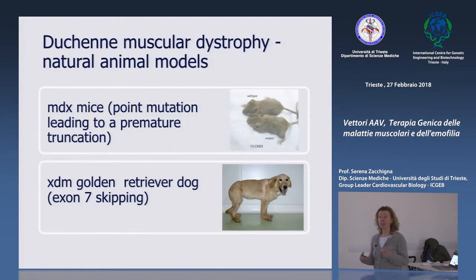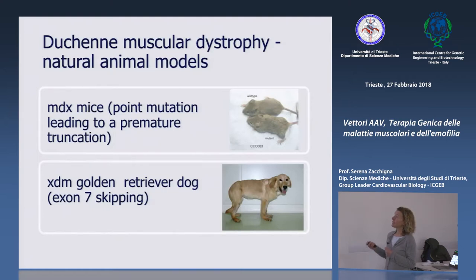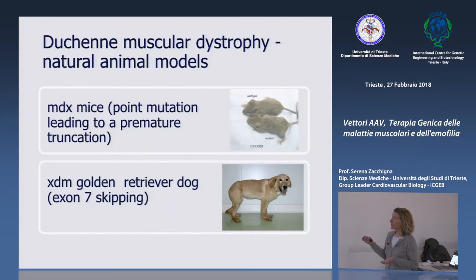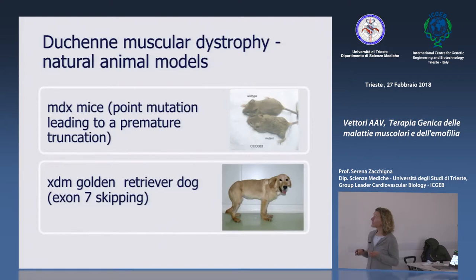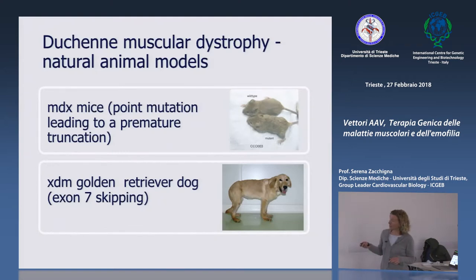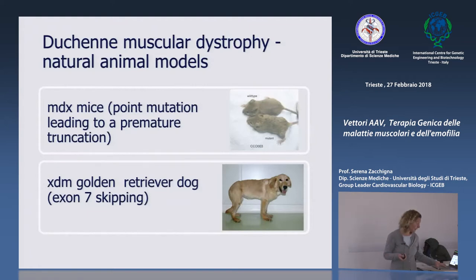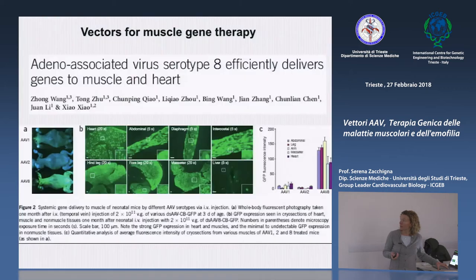Aspetti positivi per la terapia genica della distrofia di Duchenne includono l'esistenza di modelli animali naturalmente presenti: topi MDX con una mutazione puntiforme che produce una proteina tronca, e cani Golden Retriever con una forma di distrofia muscolare dovuta allo skipping dell'esone 7, che sviluppano una malattia molto simile a quella umana.